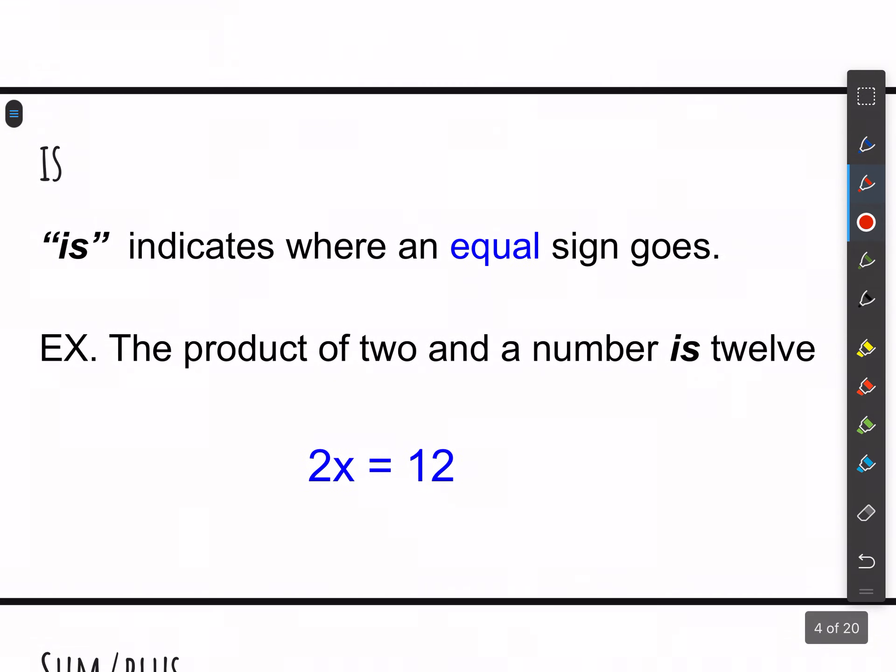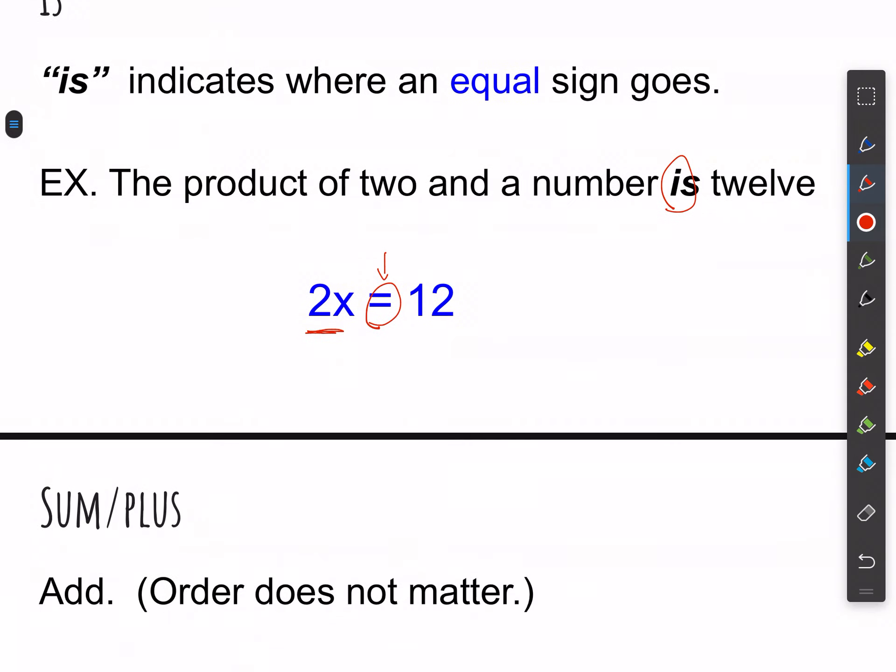So is is the first one I want to look at. Is indicates where an equal sign goes. So here's an example. The product of 2 and a number is 12. So product of 2 and a number is. Is represents equals. Is 12. We don't say is equal to. We just say is. So is means equals, essentially.